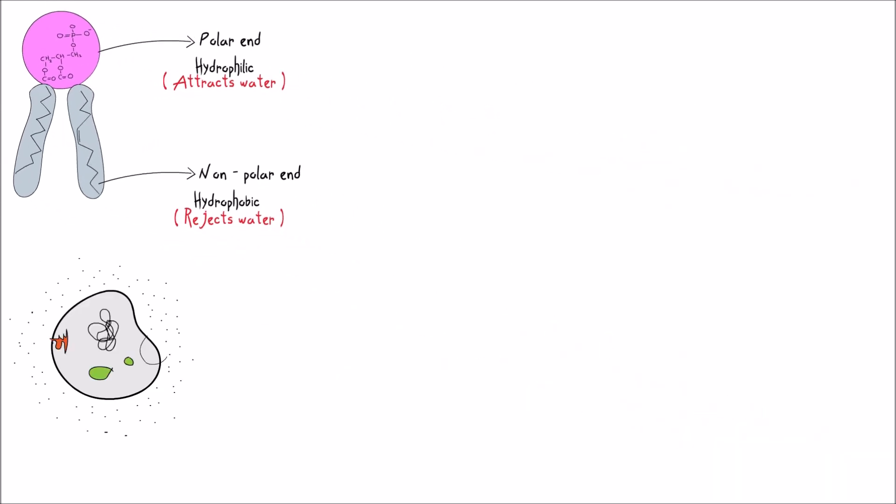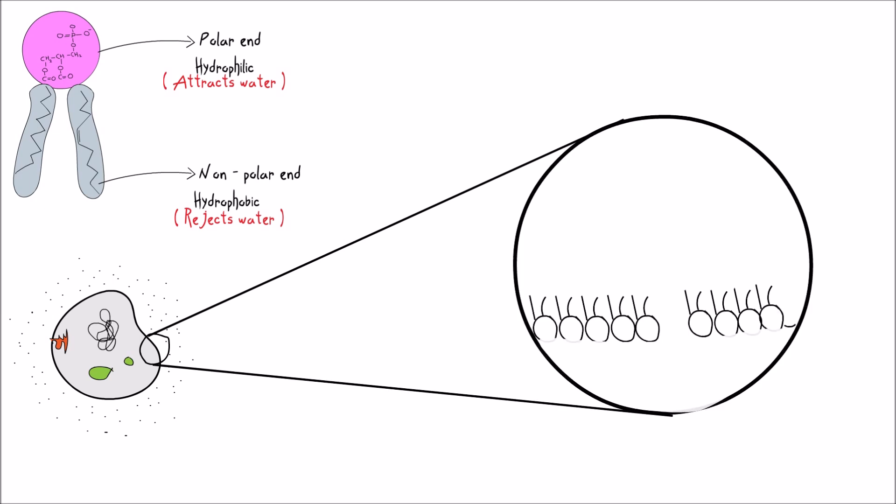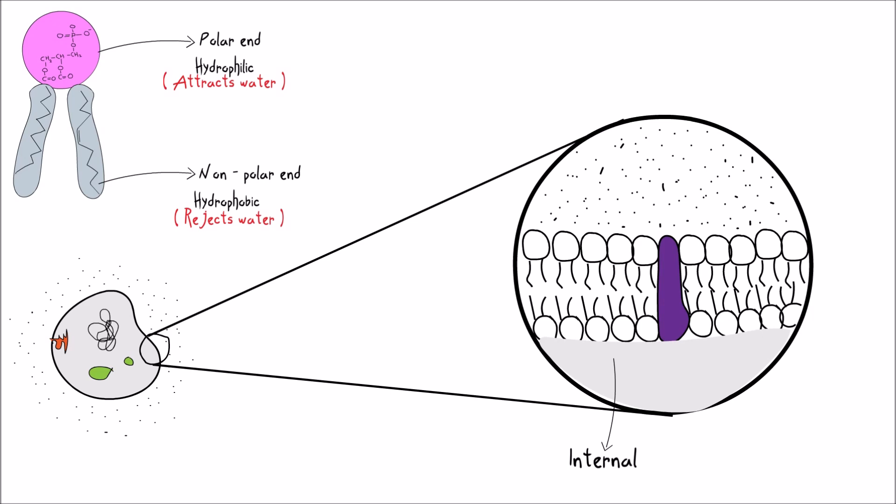The two phospholipid layers are arranged in such a way that the polar ends of phospholipids of each layer are directly exposed to internal and external environments of the cell.